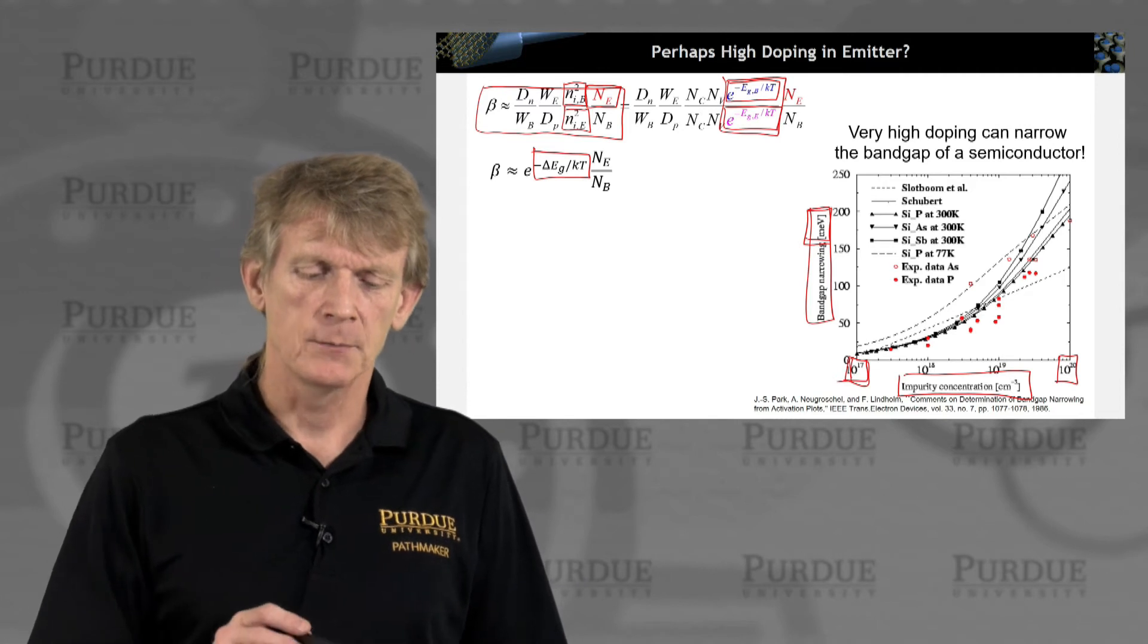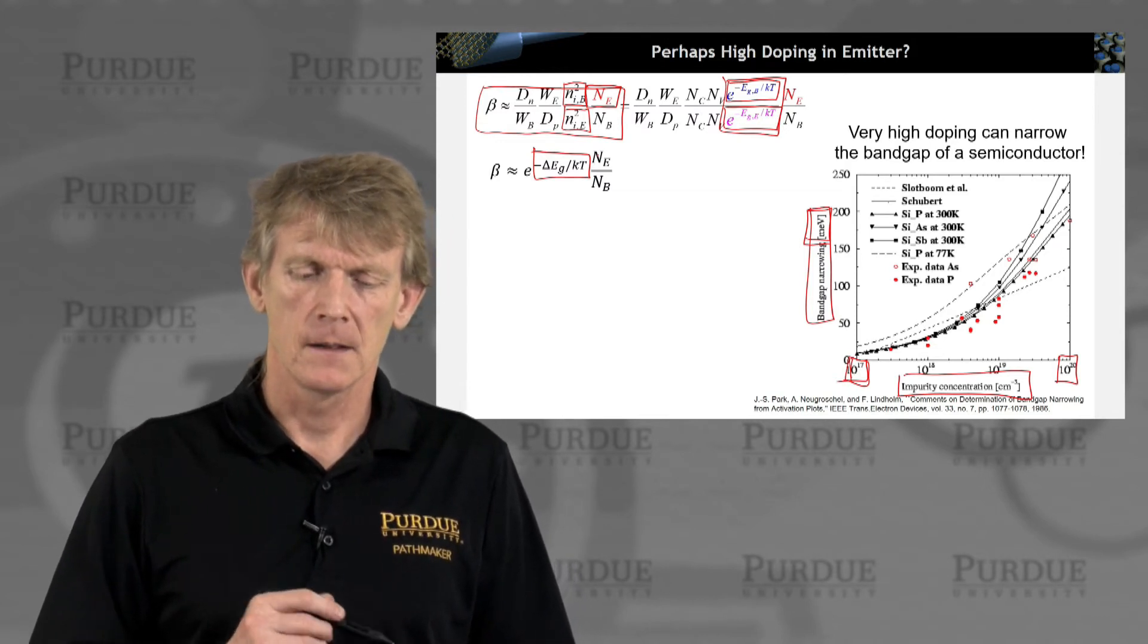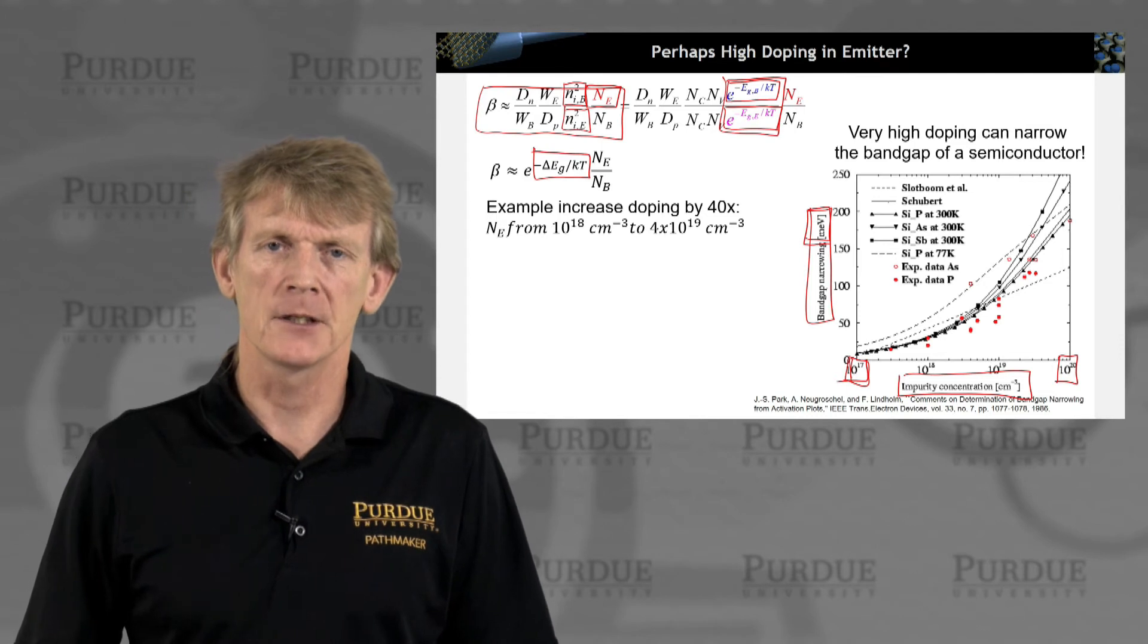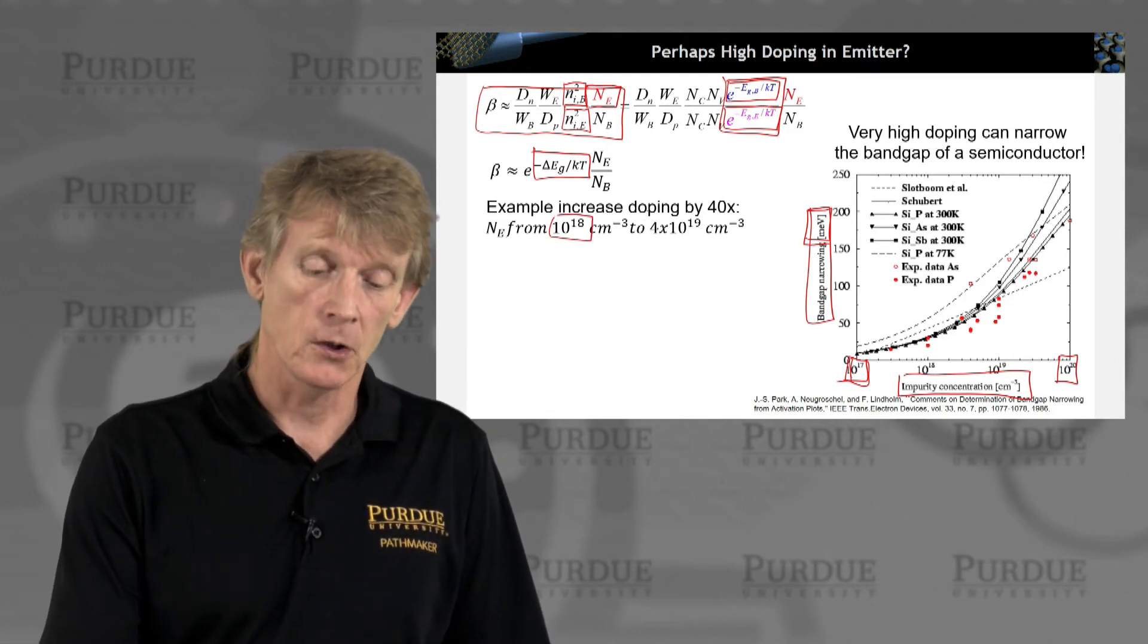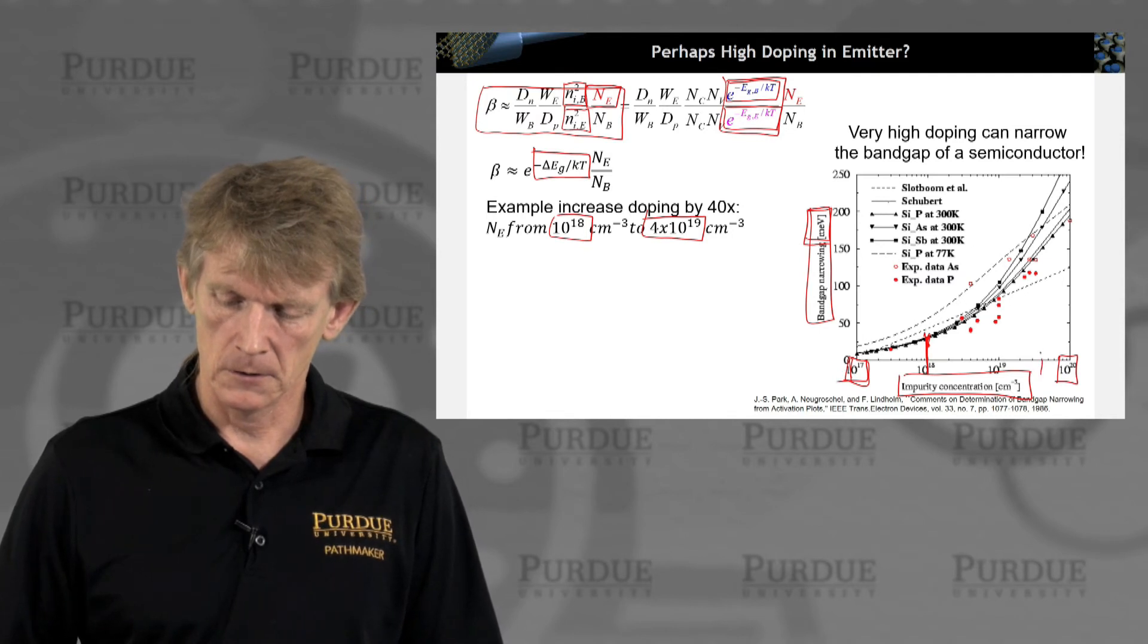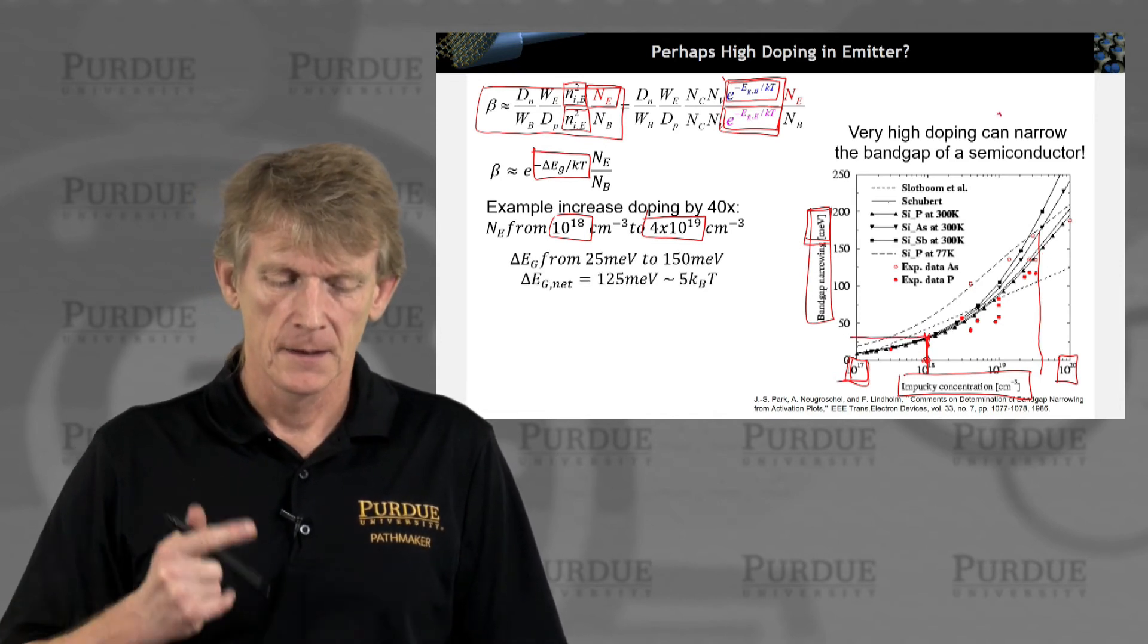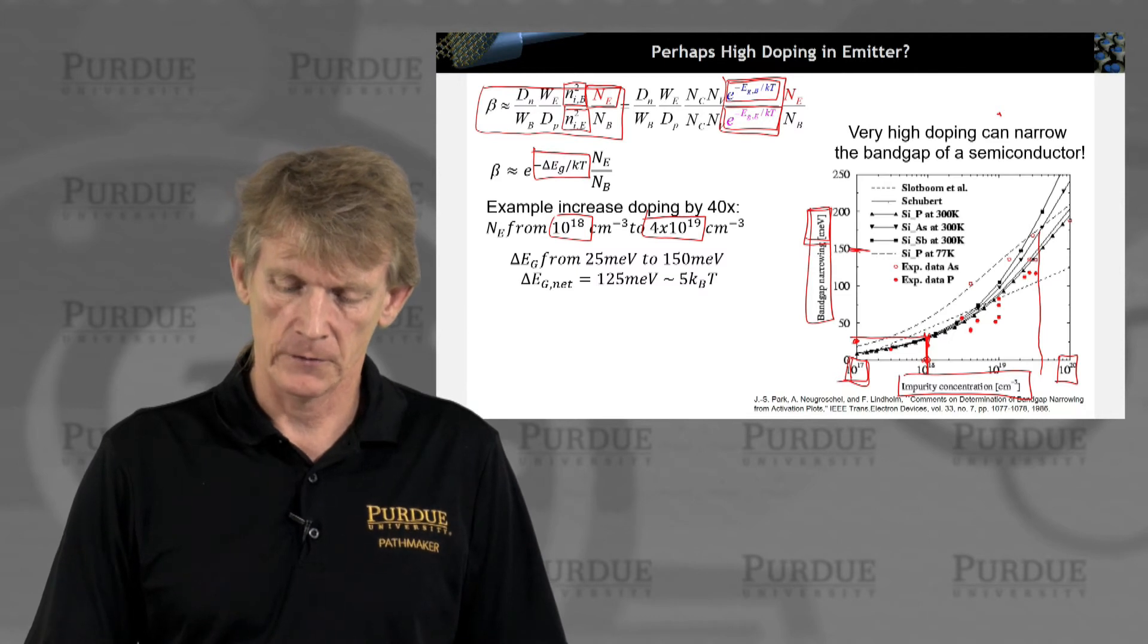I can pull together this band gap difference into a single term here, and I'm going to look at beta now as being modulated by this term. So I want to modulate this term and increase beta by increasing NE, the emitter doping. So for argument's sake, let's say I want to increase my emitter doping by a factor of 40. Let's say I go from a reasonable 10 to the 18 to also very reasonable 4 times 10 to the 19. So I'm going to increase my doping from here to here.